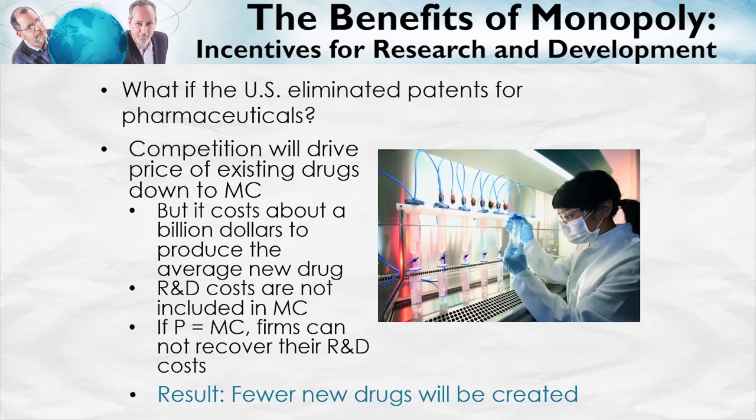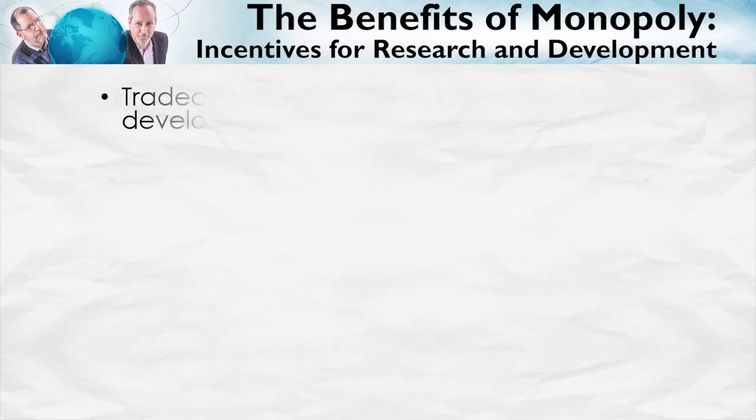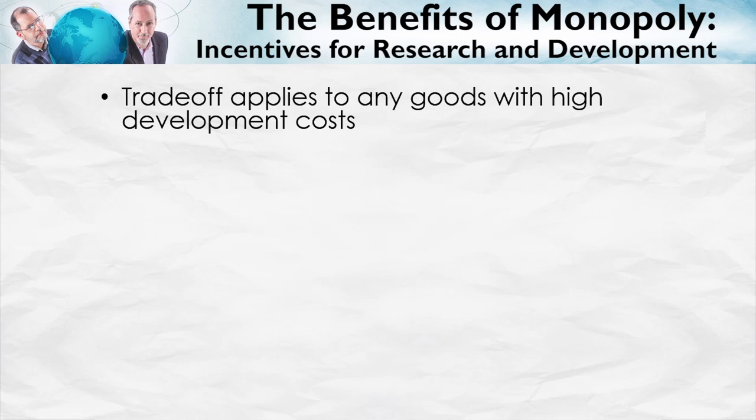Once the drug is created, the patent — the monopoly — creates inefficiency: we get too few units produced. But the patent increases the incentive to produce new drugs in the first place. So there's a trade-off: more monopoly reduces static efficiency, the quantity produced, but can increase dynamic efficiency — the incentive to do research and development. This trade-off applies to other goods with high development costs, not just pharmaceuticals.